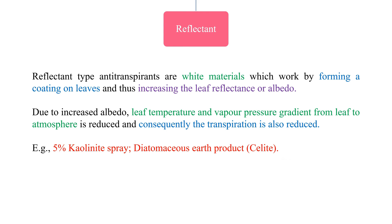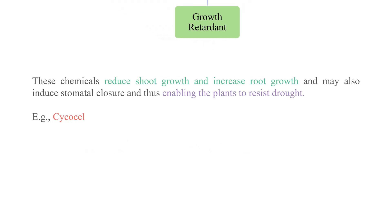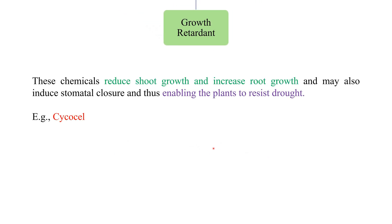For example, a 5% caulinase spray and diatomaceous earth product sealite can act as reflectant type antitranspirants. The last type is the growth retardant type antitranspirants.